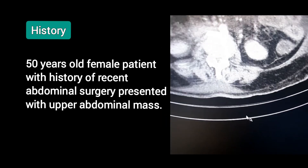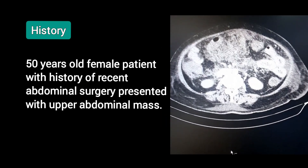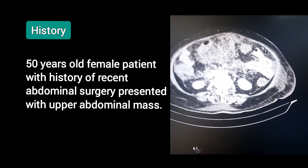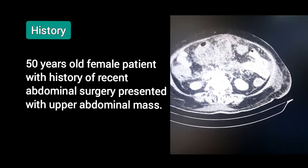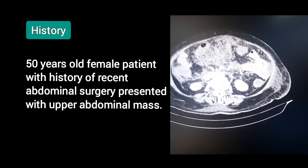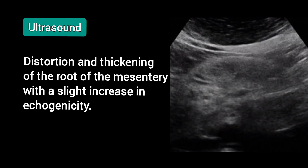A 50-year-old female patient with a history of recent abdominal surgery presented with an upper abdominal mass. Ultrasound shows distortion and thickening of the root of the mesentery with a slight increase in echogenicity.